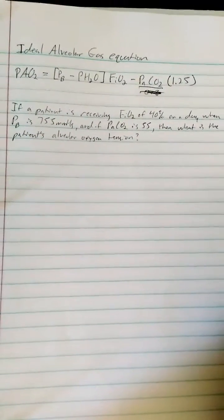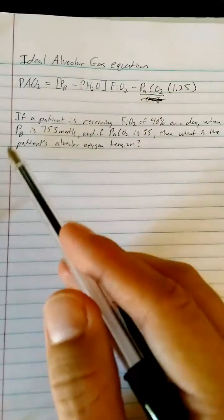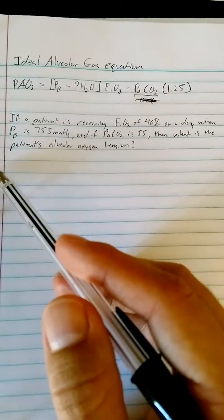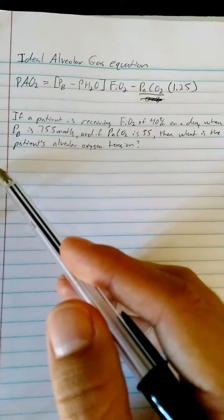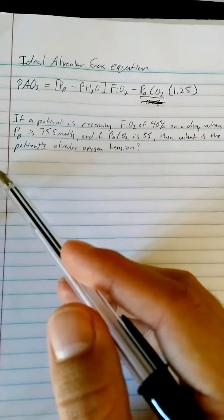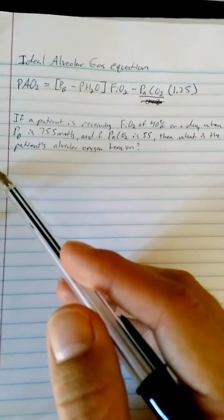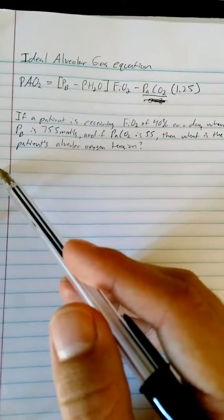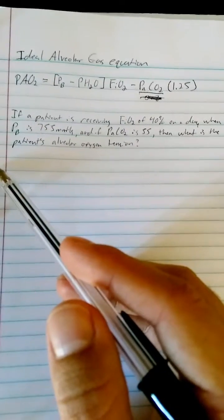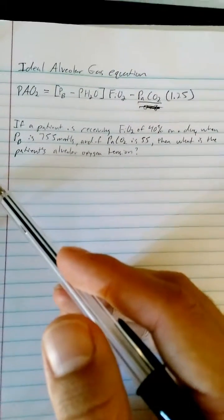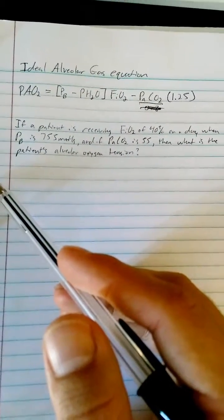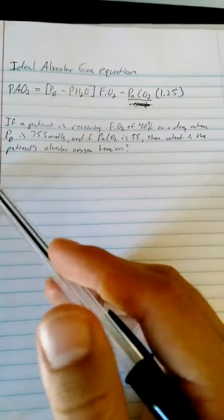All right guys, so here is my example. If a patient is receiving an FiO2 of 40% on a day when the barometric pressure is 755 millimeters of mercury, and if the PaCO2 is 55, then what is the patient's alveolar oxygen tension? Using our formula, we just start plugging in stuff.